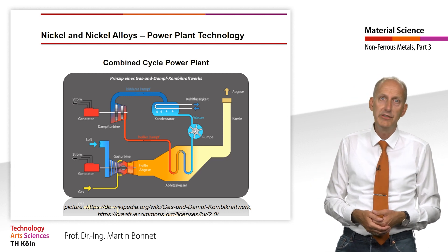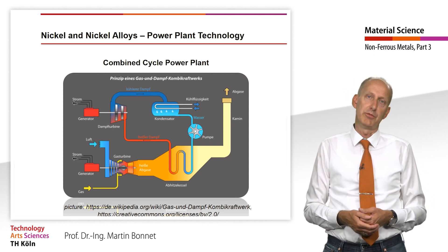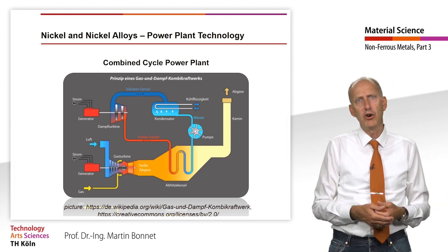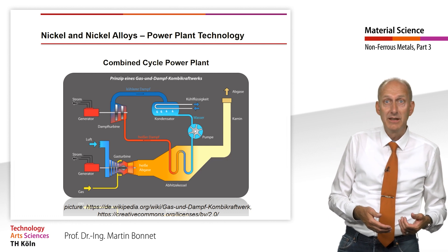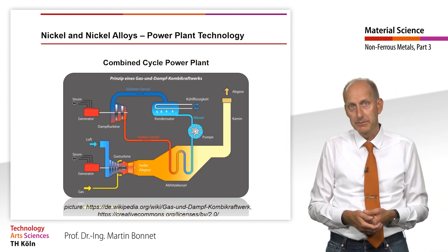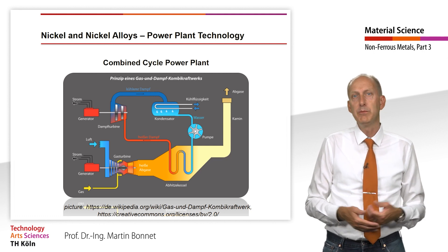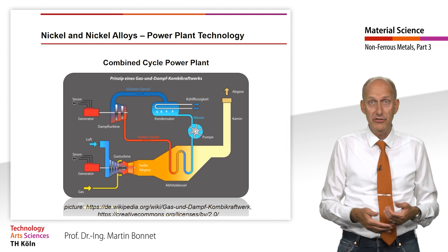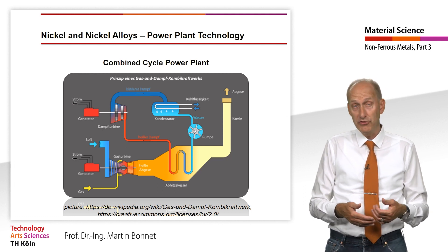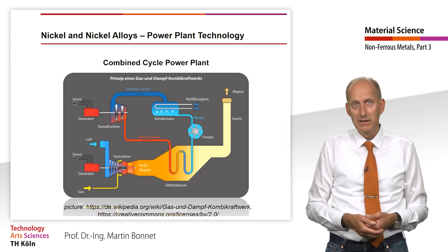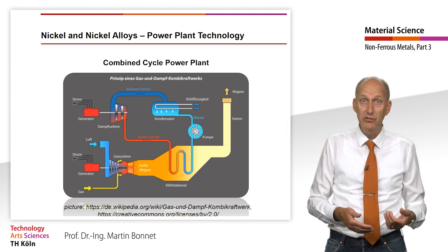Combined cycle power plants are even more efficient, achieving electrical efficiencies of up to 60%. Gas turbines operate at temperatures up to 1500°C — more than twice as much heat as steam turbines. The thermal energy of the hot exhaust air from the gas turbines is used in a downstream steam power process. With additional extraction of the remaining energy for district heating, overall efficiencies of up to 90% are possible in modern combined cycle power plants. As the efficiency of power plants increases, emissions of the greenhouse gas carbon dioxide decrease for the same fuel.